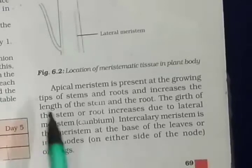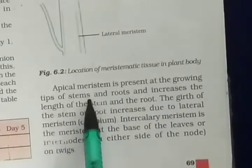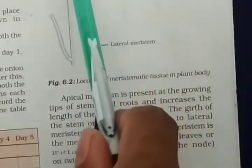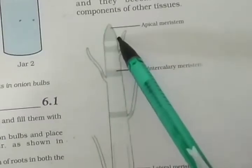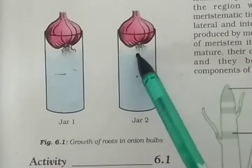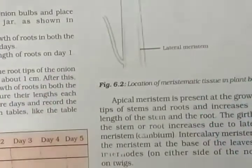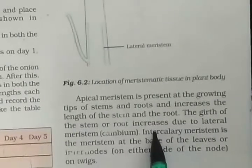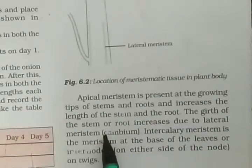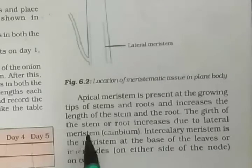Apical meristem is present at the growing tips of stems and roots. It increases the length of the stem and root. The girth of the stem and root increases due to lateral meristem.